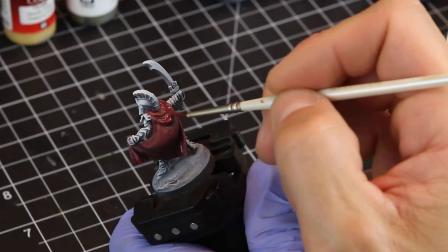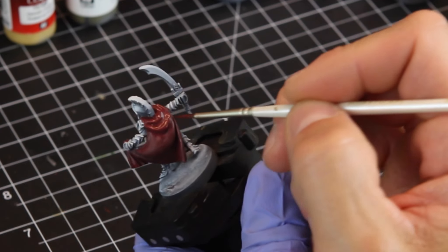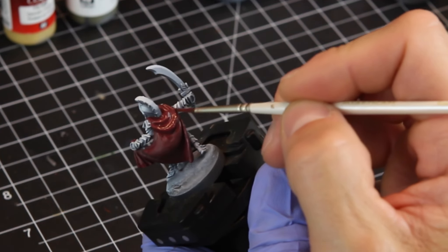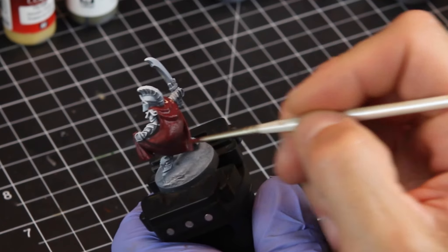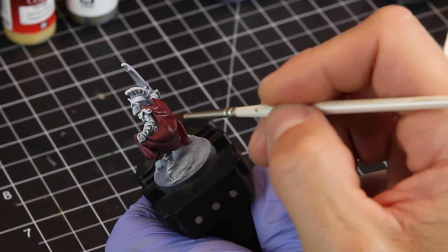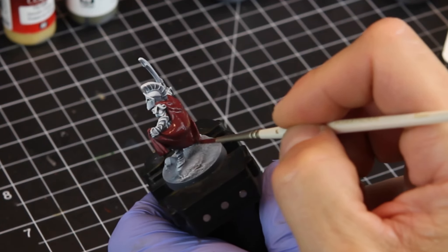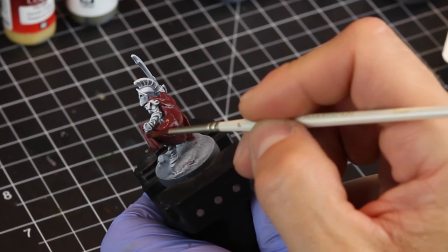But before we apply that, we first have to do our base coat. And for a base coat, I like to do a 3 to 1 water to paint ratio. And a good rule of thumb also is you want to apply at least 3 coats of paint for your base coat before you start a glaze or highlights or any other techniques.